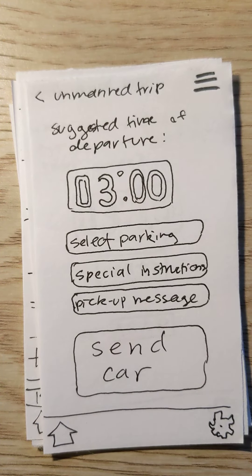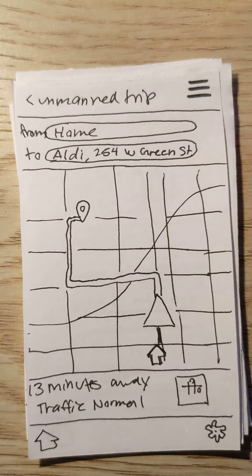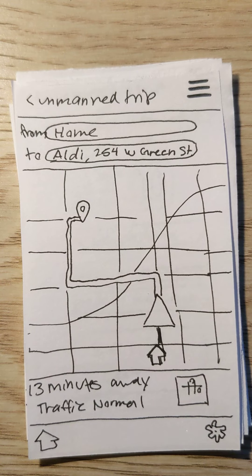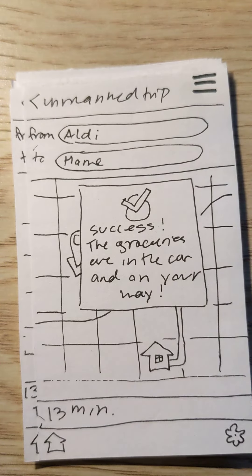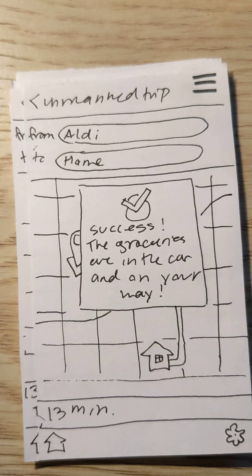Once you've edited all of that, you can hit 'send car.' It'll show you the trip and the progress your car is making. Once all your groceries have been picked up, it'll show you a notification screen that says 'success, your groceries are in the car and on the way home,' along with an ETA for when they'll arrive.